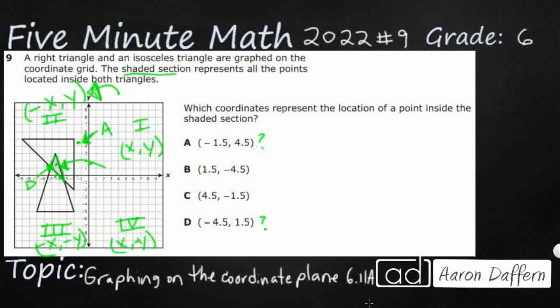So let's just verify to make sure that I was right and we eliminated B and C correctly. So B is a positive 1.5 and a negative 4.5. And that's going to be down to here. So right down there. That's totally in the wrong quadrant here. So that's B.